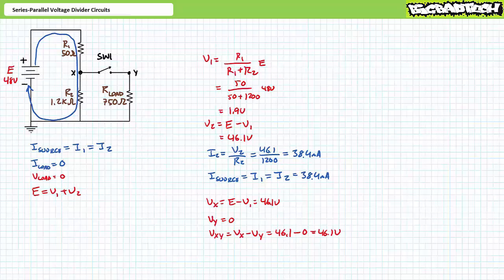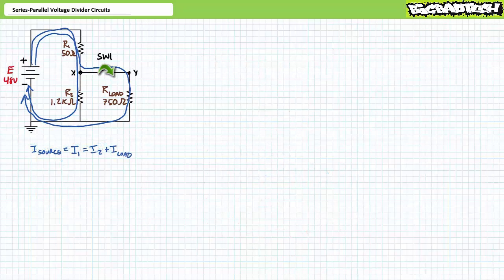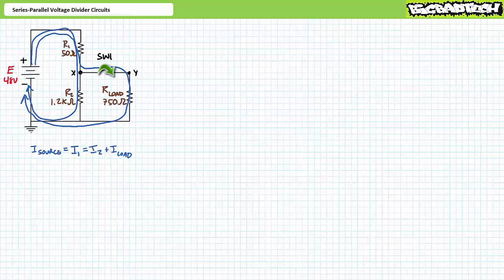Let us now consider the radically different behavior of this same circuit when switch one closes. When switch one closes, there is another current path in this circuit. As such, we must jettison absolutely everything from our previous pure series circuit analysis and begin anew. With switch one closed, a Kirchhoff's current law analysis demonstrates that source current must travel through I1, then splits into two paths: one through R2, the other through the load resistor. The KCL equation for this circuit is I source equals I1 which equals I2 plus I load.